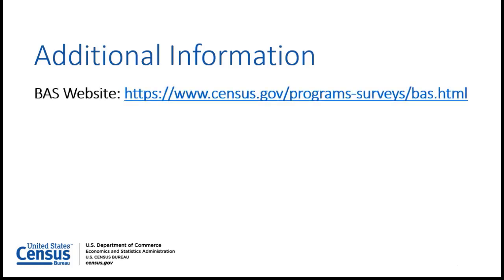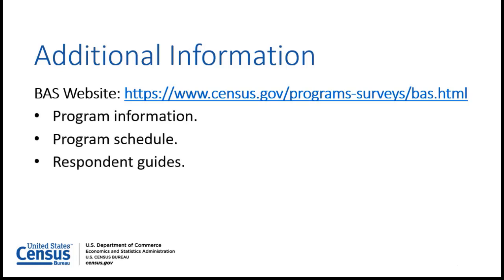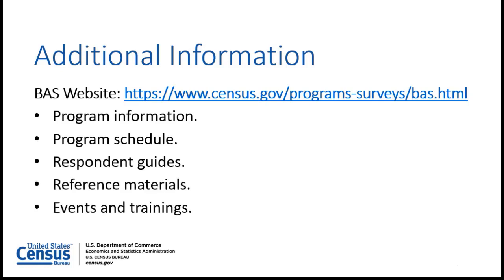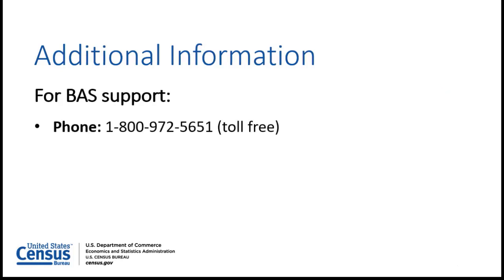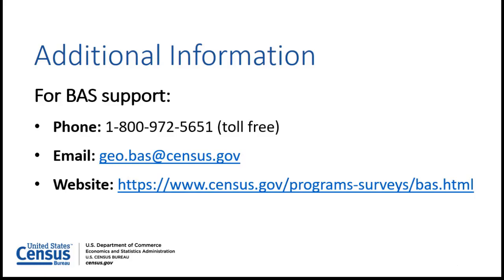For additional BAS information, including information on how to get started with the survey, please visit the BAS website using the provided URL. The BAS website contains program information, the program schedule, respondent guides, reference materials, and information on BAS events and trainings. For BAS support, please contact the Census Bureau by phone toll-free at 1-800-972-5651 or by email at geo.bas@census.gov. Participants may also refer to the BAS website for resources.